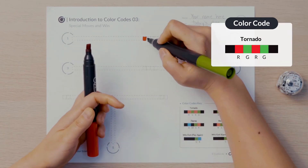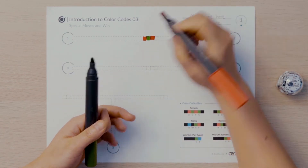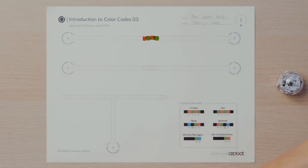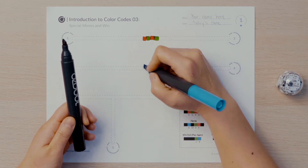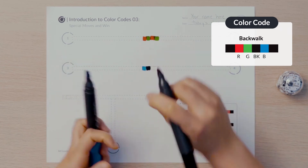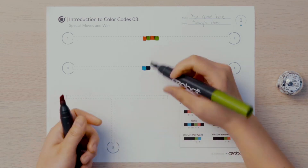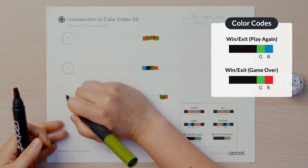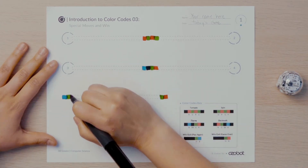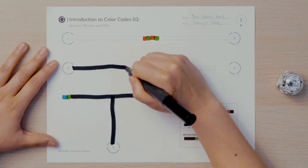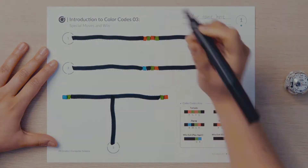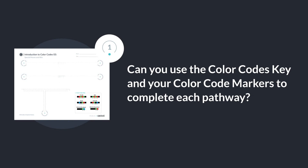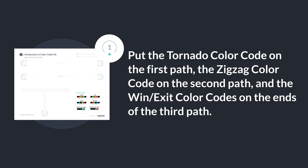First, you will add a tornado color code in the first pathway. Then you will add a zigzag color code in the second pathway. Since the special moves color codes are asymmetric, the spin color code will run opposite the tornado color code and the back walk color code will run opposite the zigzag. Asymmetric color codes are codes that program the bot to perform different actions when read from different directions. Next, you will add both win-exit color codes on the ends of the third pathway. Finally, trace the lines on the pathway with black marker.